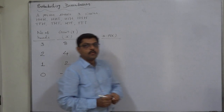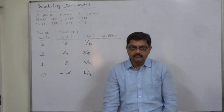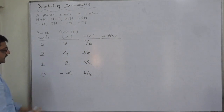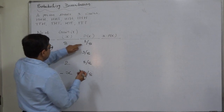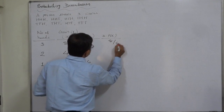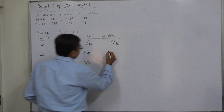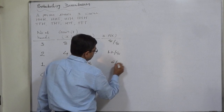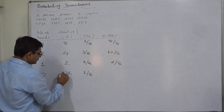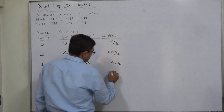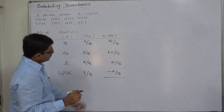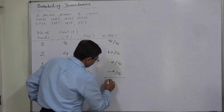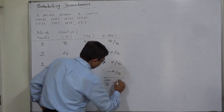Now, to have a fair game, the net expected gain should be zero. Let us calculate the expected gain: eight into one by eight is eight by eight. Four into three by eight is twelve by eight. Two into three by eight is six by eight. And minus x into one by eight is minus x by eight. The summation comes to twenty-six by eight minus x by eight.